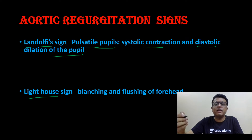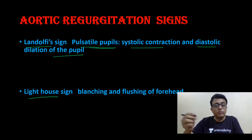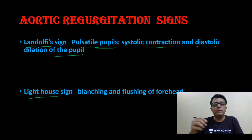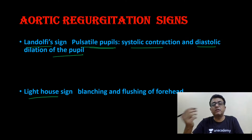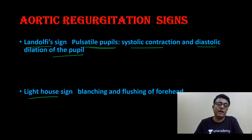To remember again: Muller sign — pulsation in uvula; Bozzolo sign — pulsation in nasal mucosa; Baker sign — pulsation in retinal arterioles; Rosenbach sign — pulsation in liver; Gerald sign — pulsation in spleen; Shelley sign — pulsation in cervix; Landolfi sign — pulsatile pupil; Lighthouse sign — blanching and flushing of forehead.